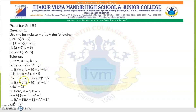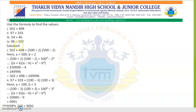Next: 3x minus y into 3x plus 5. Here the value of a is 3x and b is 5. It becomes a squared minus b squared equals 3x squared minus 5 squared, which gives 9x squared minus 25. Next sum: a plus 6 into a minus 6 equals a squared minus 6 squared, which equals a squared minus 36.